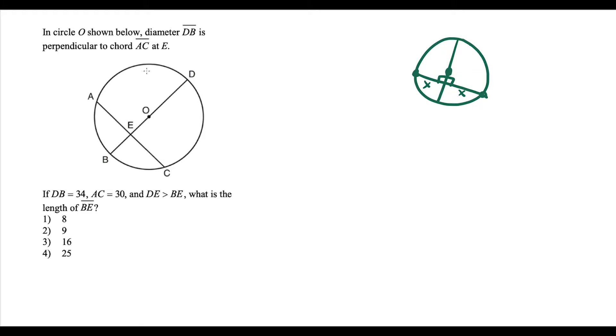So notice here, diameter DB is perpendicular to chord AC. So that means that this diameter is going to cut this chord in half from here to here. So if the whole thing is 30, that means each piece is going to be 15.